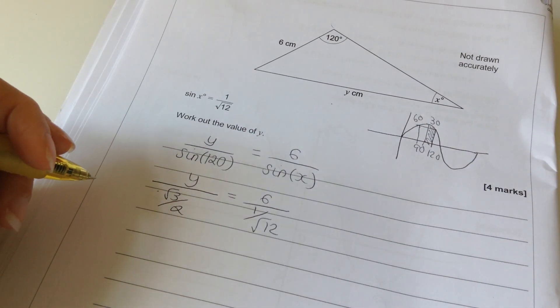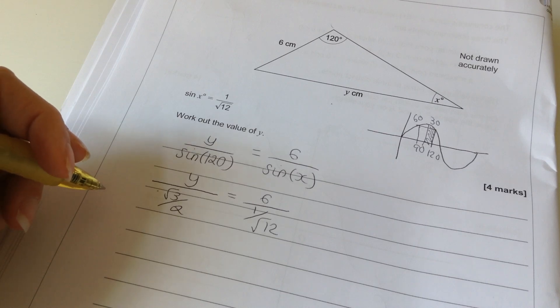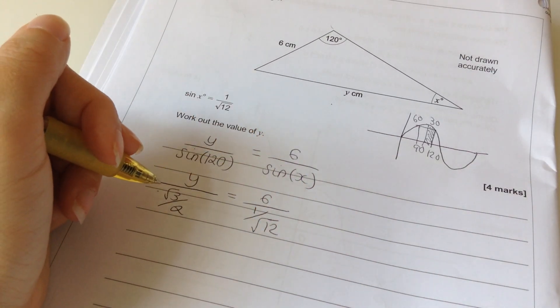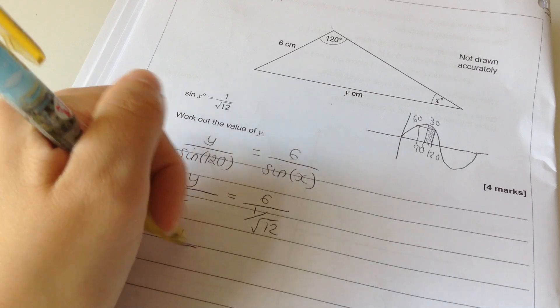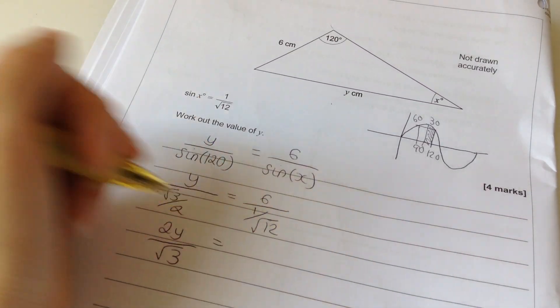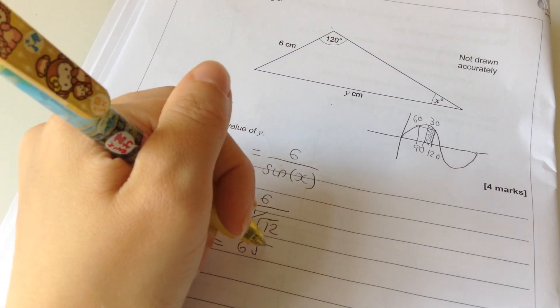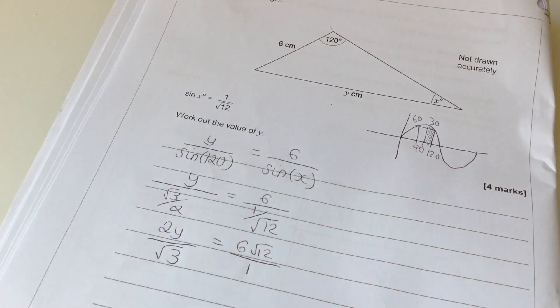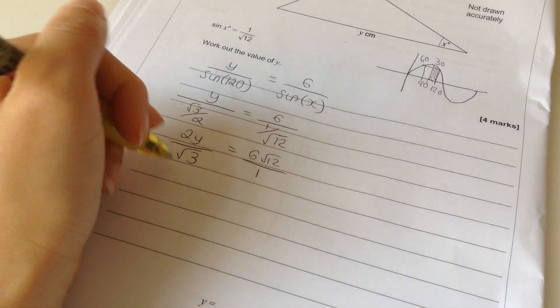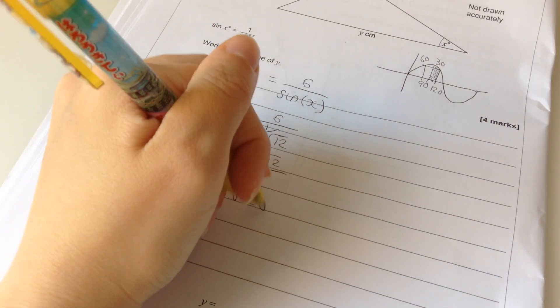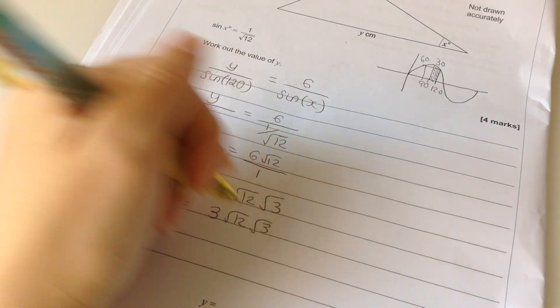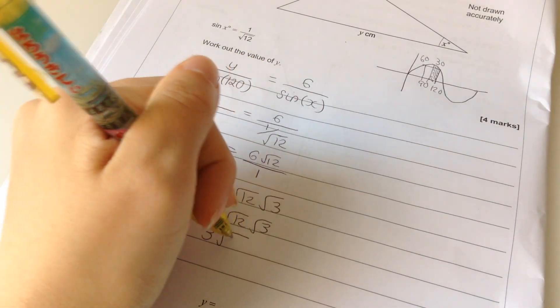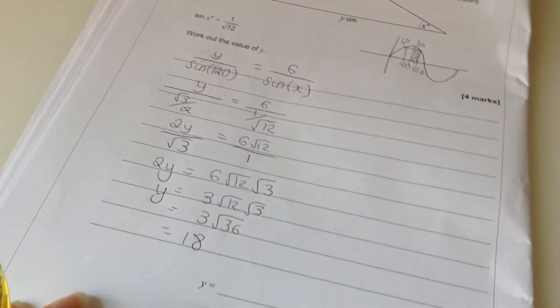So, I've got that. I've got some ugly double-decker fractions going on. So, let's, well, I don't even know. Let's times this fraction by 2 over 2. Like that. Let's times this fraction by root 12 over root 12. Then, what am I trying to get? Y. So, let's times everything by root 3. And then, let's divide by 2. Okay. That's root 36, which is 6. So, that's going to be 18. So, Y is 18.